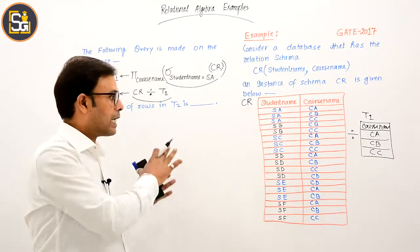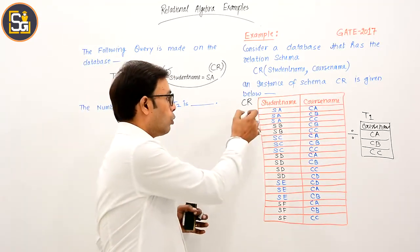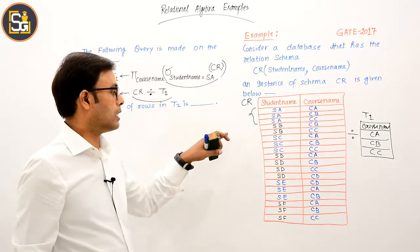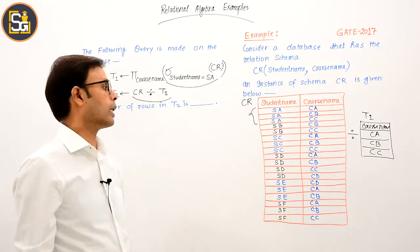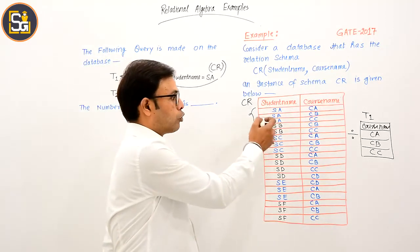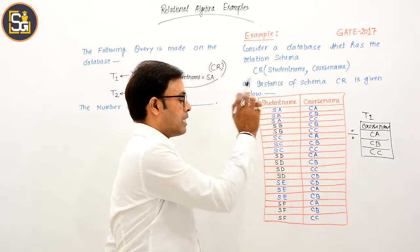If we want to answer directly, these three tuples: SA is a student who has enrolled in three courses. SA - the name is same in all three places: CA, CB, CC.